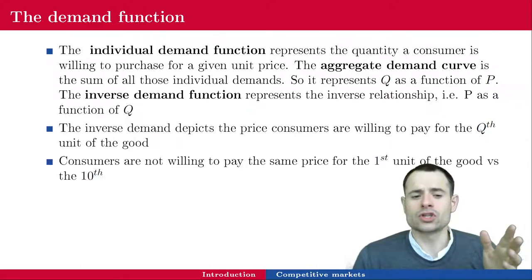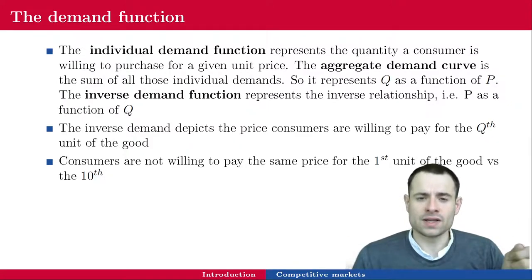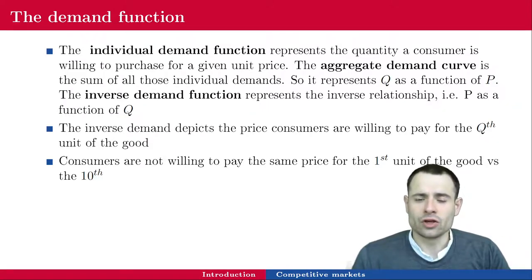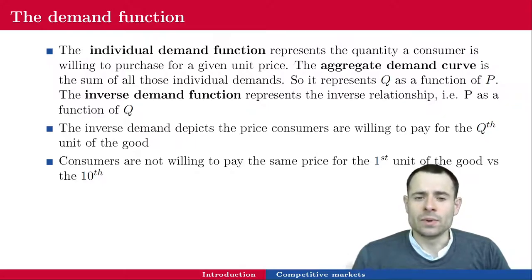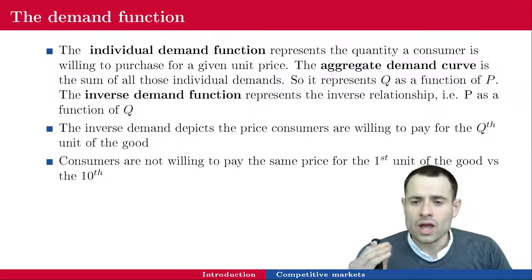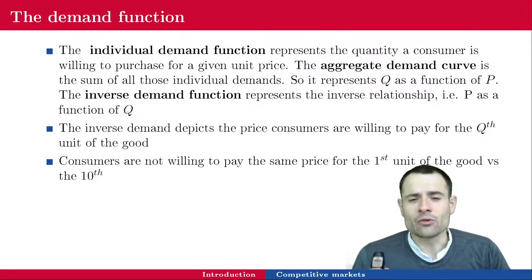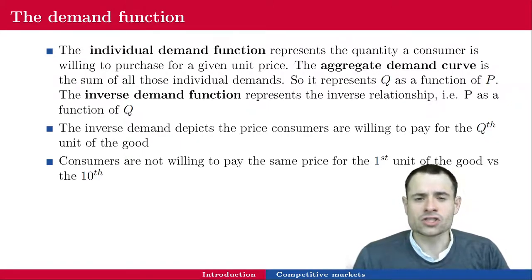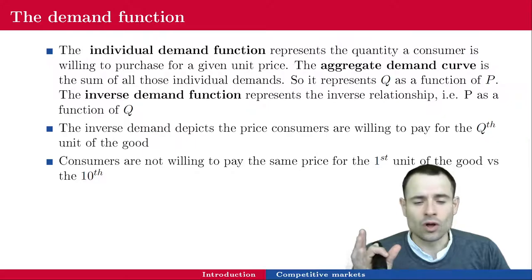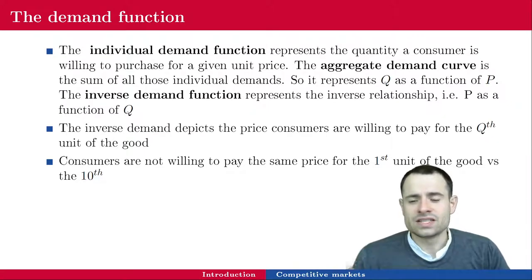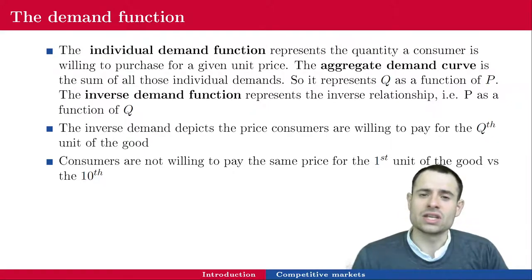Remember that consumers are not willing to pay the same price for the first unit of the good versus the 10th unit. This is due to the law of diminishing marginal utility. Everybody is willing to pay a higher price for the first coffee versus the 10th. I'm willing to pay $3 for the first tea, but I'm willing to pay $0 for the 10th tea of the day because I don't drink that much tea.